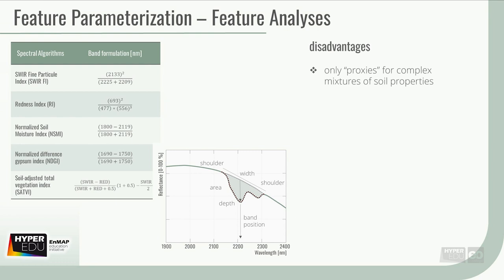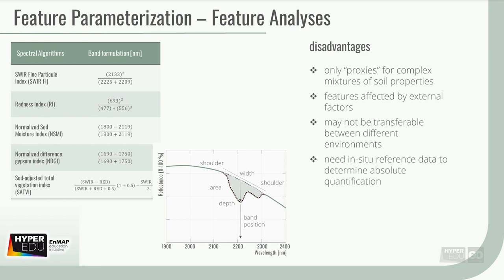In addition, these features, shapes, and depths may be affected by external factors, and may not be transferable between different environs. Besides, these methods rely on empirical modeling, and thus need in-situ reference data to determine absolute quantification. In this regard, they have similar restrictions as more complex approaches, like chemometrics.